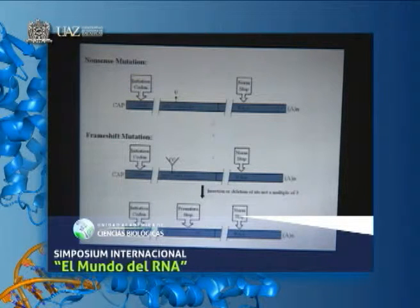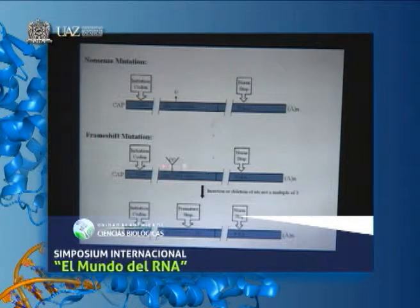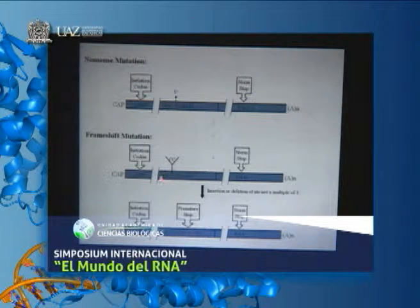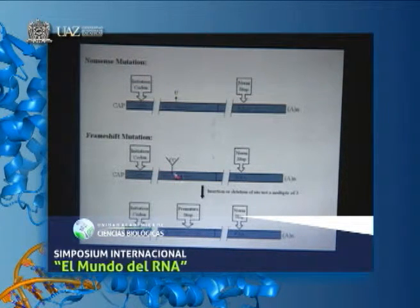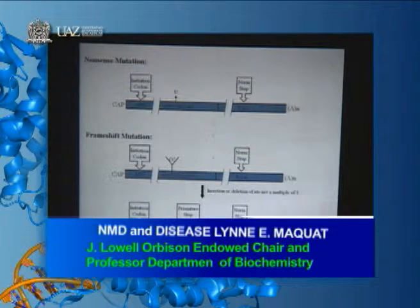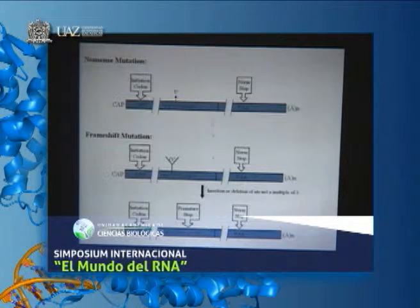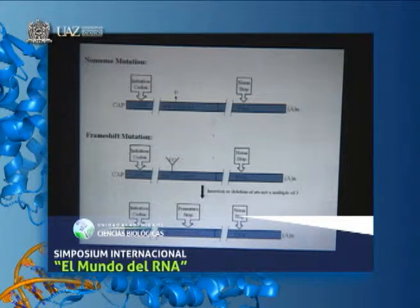Frameshift mutations are insertions or deletions of a number other than a multiple of three nucleotides, because the reading frame consists of multiples of three nucleotides, and that insertion or deletion must occur in the open translational reading frame. In this example, there's an insertion of two nucleotides, shifting the reading frame so that a UAG termination codon is generated downstream of the shift.